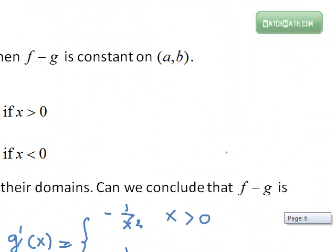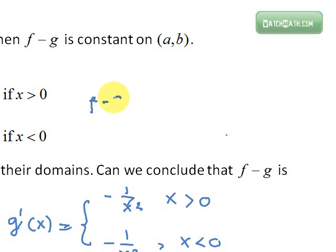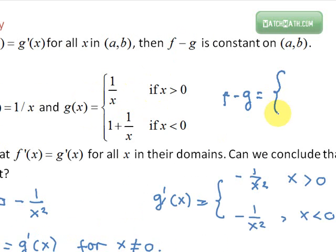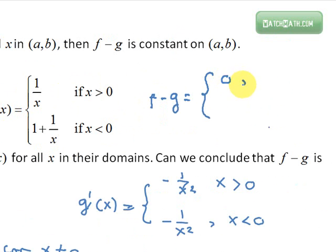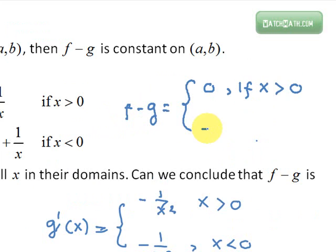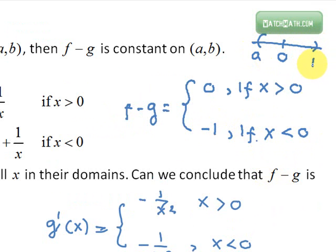In fact, f minus g is not constant because f minus g equals zero if x is greater than or equal to zero, and f minus g equals negative one if x is less than zero. So on an interval (a, b) containing zero, the value of f minus g to the left of the origin is negative one, while to the right it is zero — so it is not constant on the open interval (a, b).